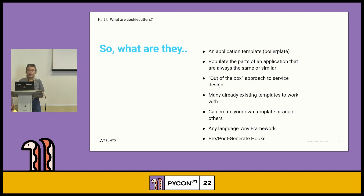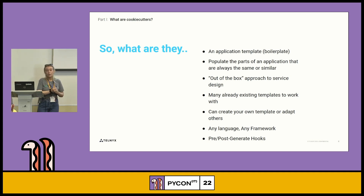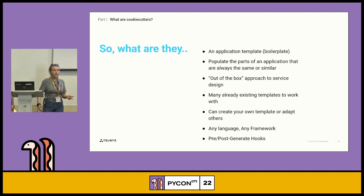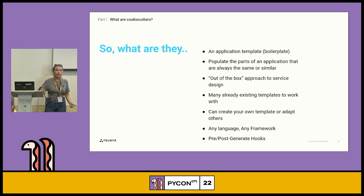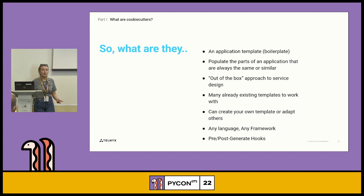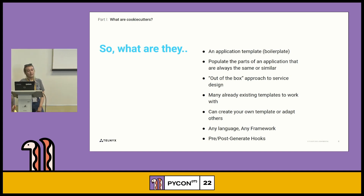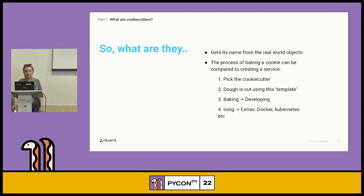An additional feature of cookie cutters is pre- and post-generate hooks. Basically, you generate your service from a cookie cutter and then you want to do something extended on top of that. For example, maybe you want to make sure the code you have is clean — you can write a script that will run after you create the service, check it, put some styling on it, whatever you want. That runs automatically; you don't need to do anything.